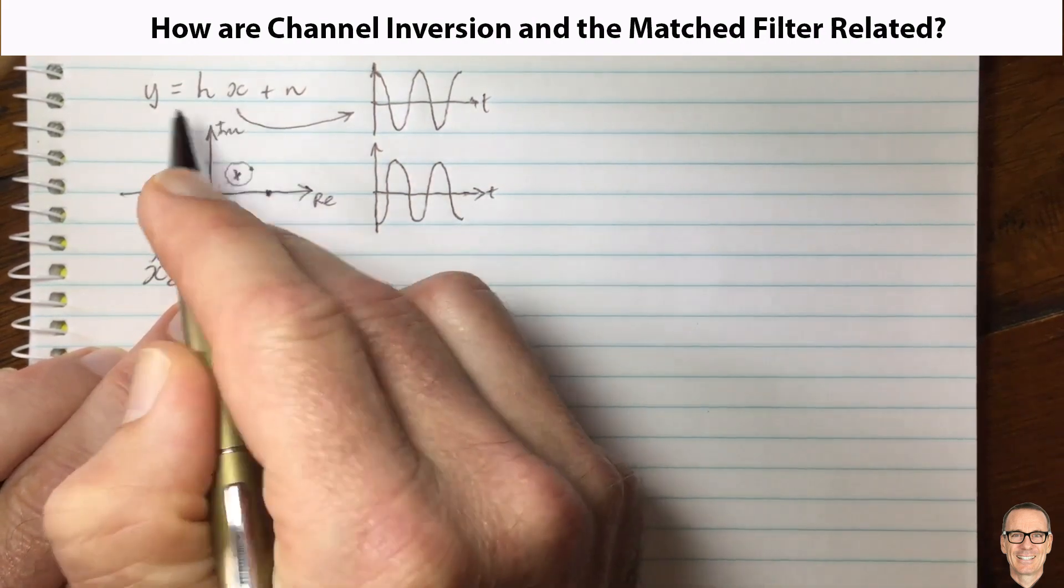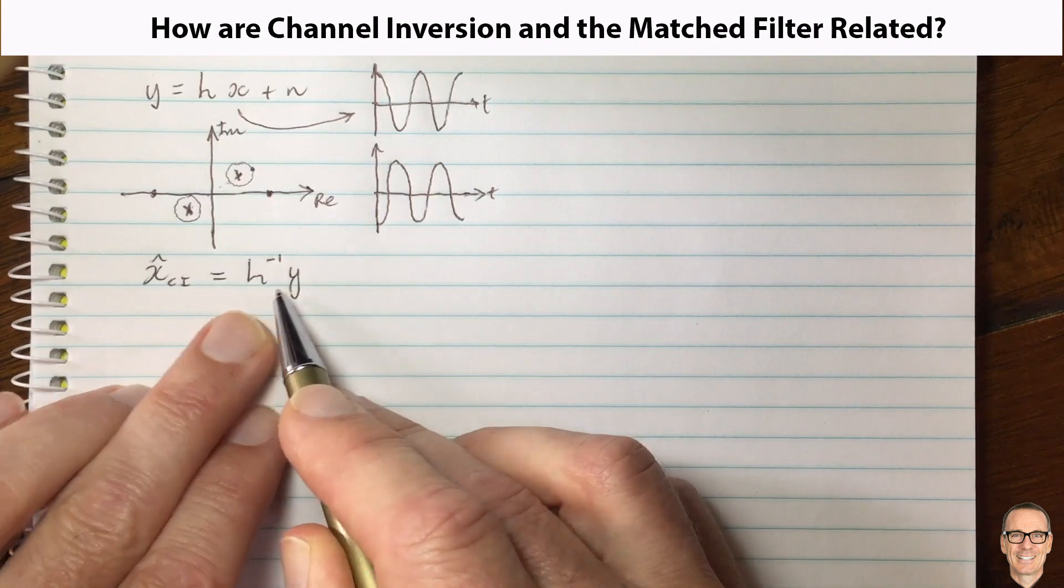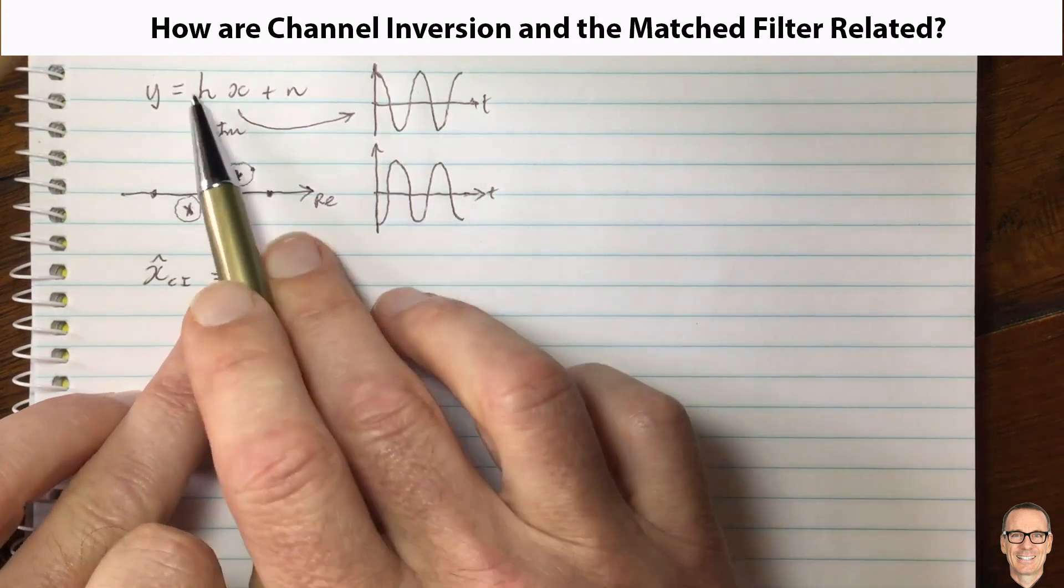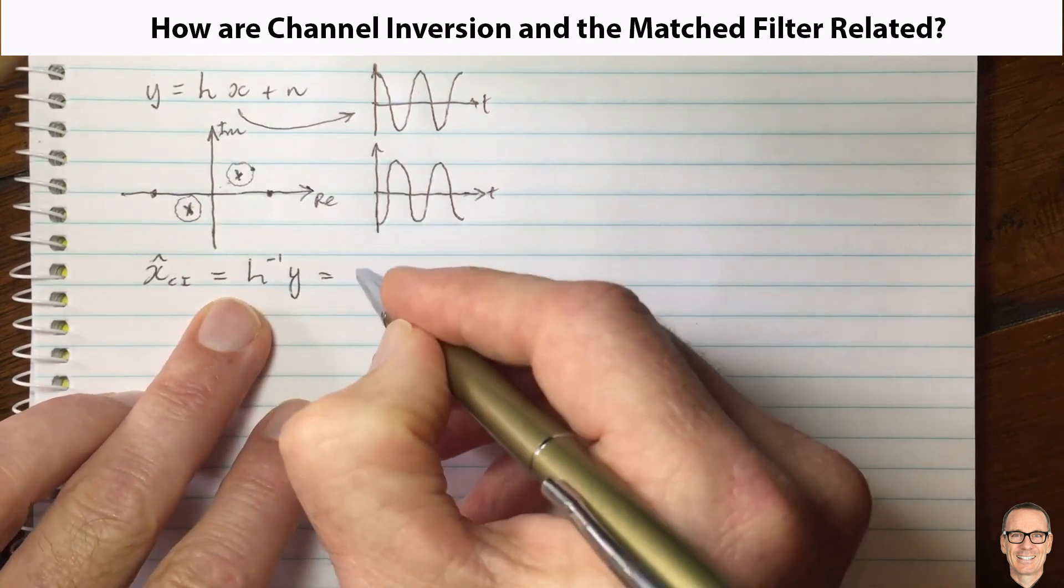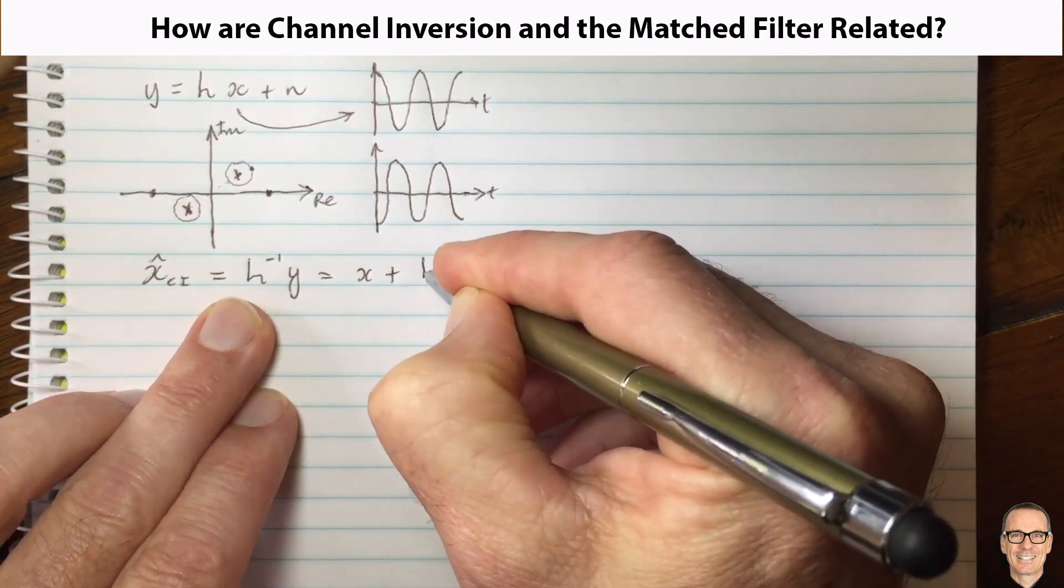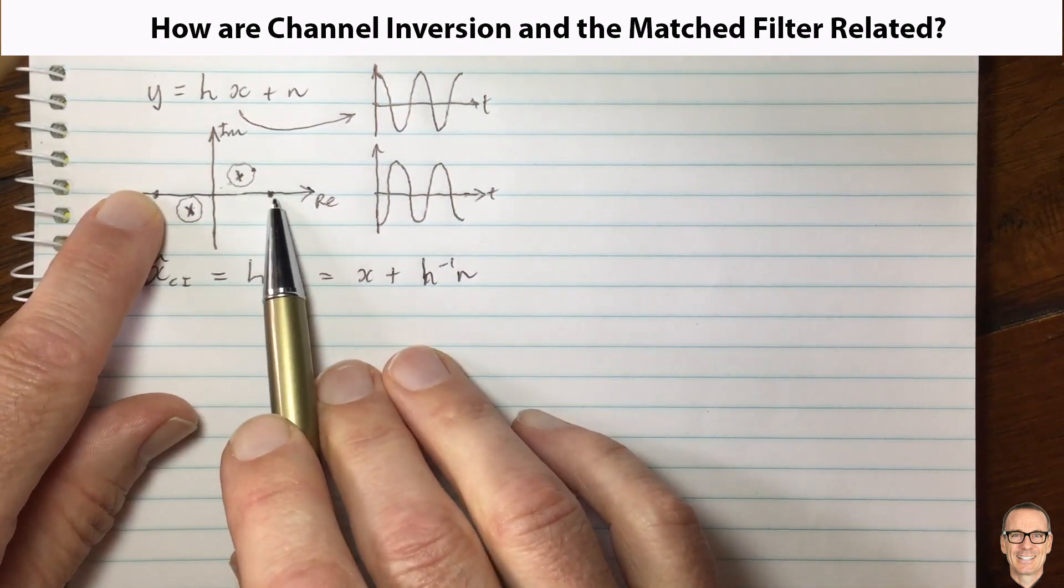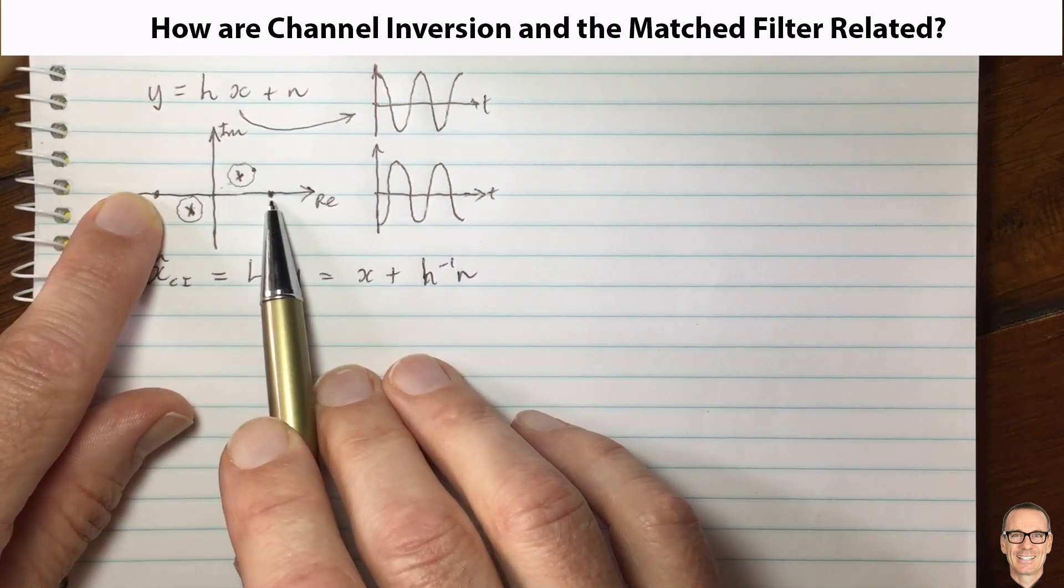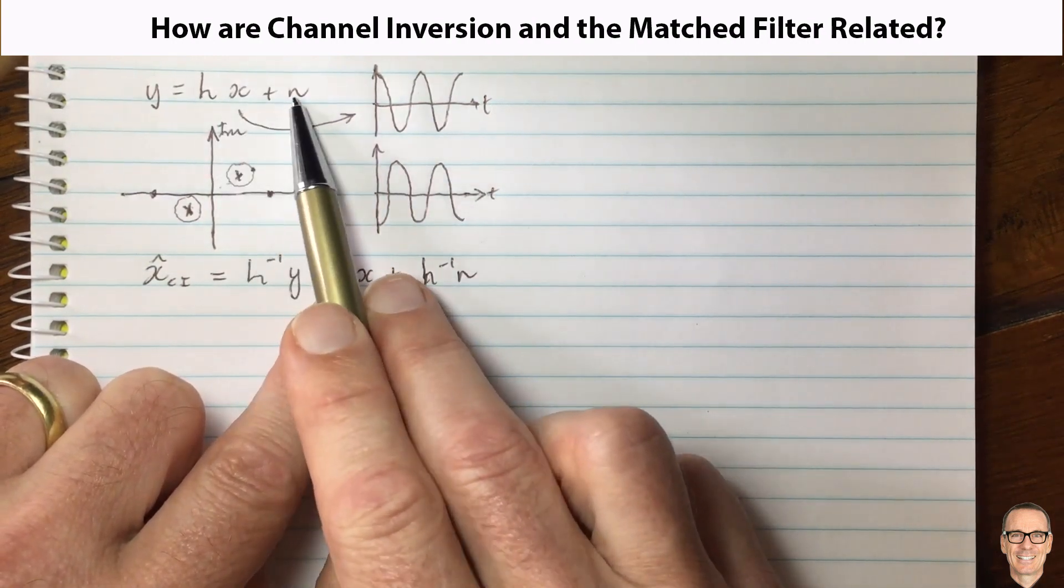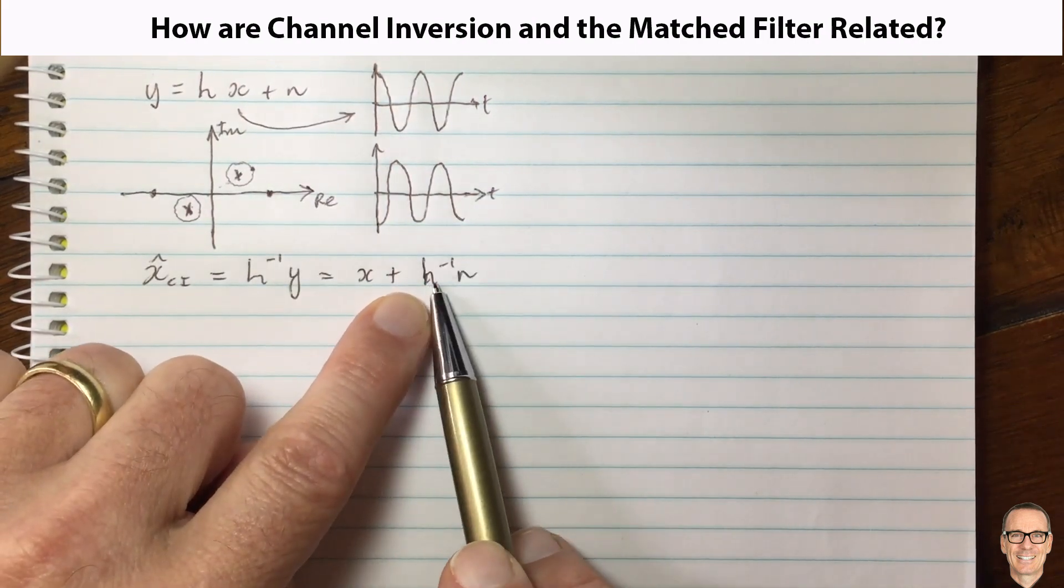Then you can take your received value and multiply by the inverse of that channel. So you take y which you've received, multiply by the inverse of the channel, and that will give you, as you see, h-inverse times h will recover x, and then you'll also be having h-inverse times n. So what the good thing about this is, this effectively takes these points and rotates them back to the original in the constellation diagram, because you've got the x component unchanged. You've removed the effect of h.